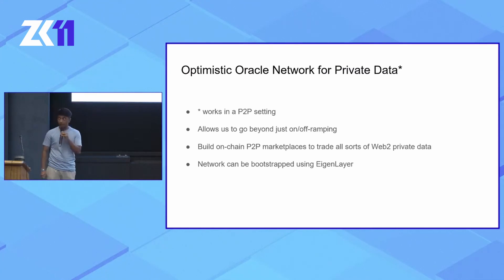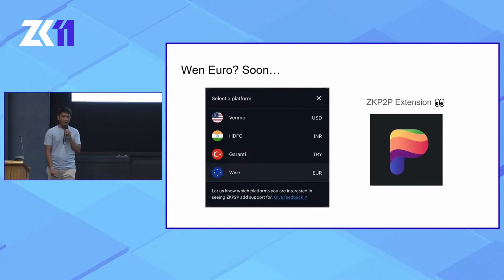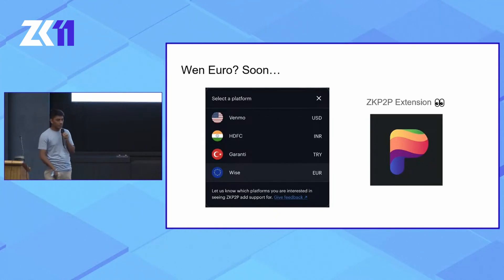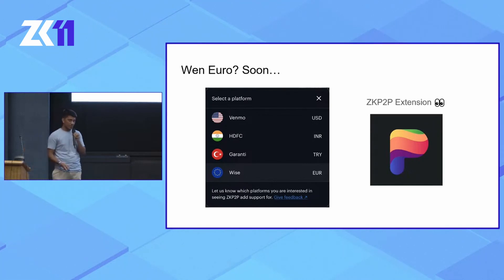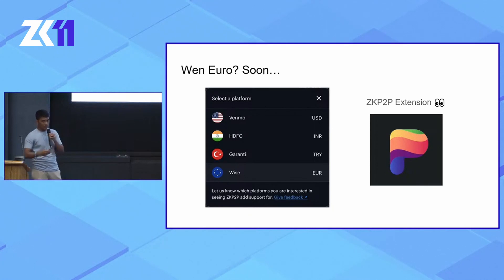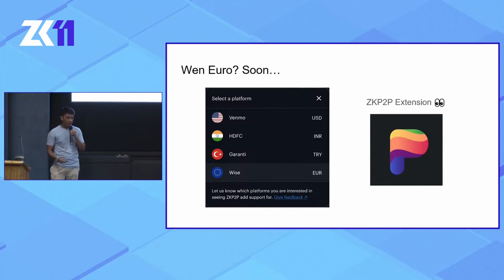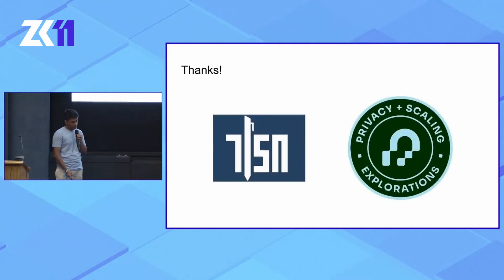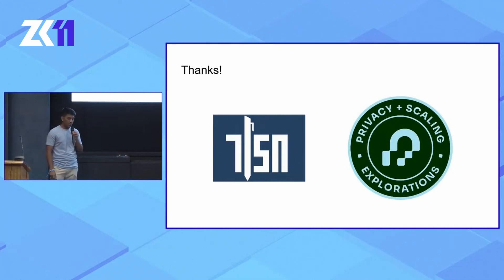The network could potentially be bootstrapped using EigenLayer. Coming back to the original question — when euro? Soon. We are in the final stages of our Wise integration using TLSN. We will also be releasing the ZKP2P browser extension along with the launch. In the initial launch, we will be using a centralized notary, and everything I've proposed is essentially down the line, maybe a year from now. We have an in-person demo — reach out to me if you're interested. Thanks to the TLS Notary team for building TLSN, to PSE for sponsoring us, the ZK email team, and the TLS Notary team.